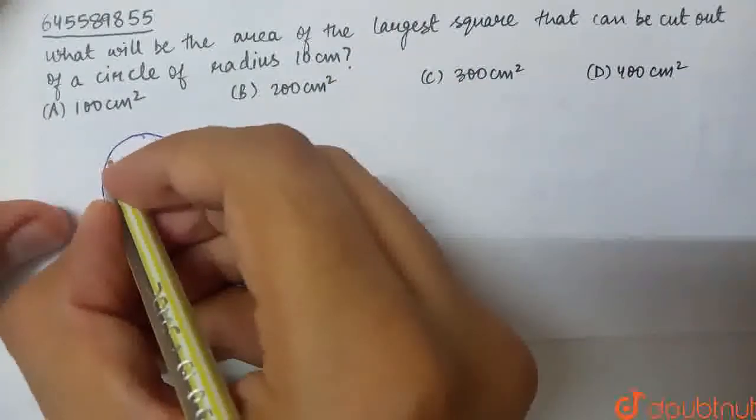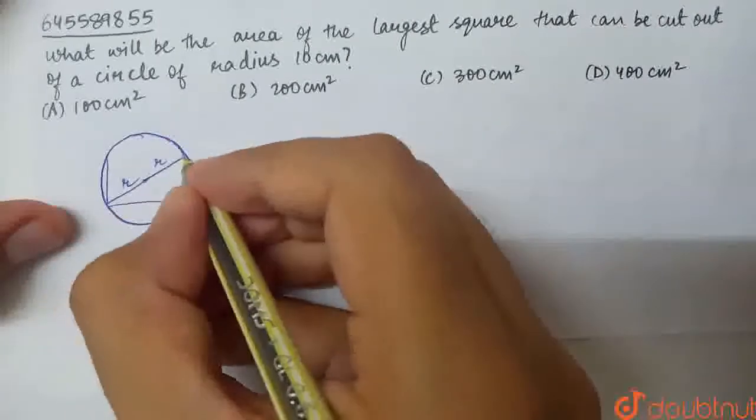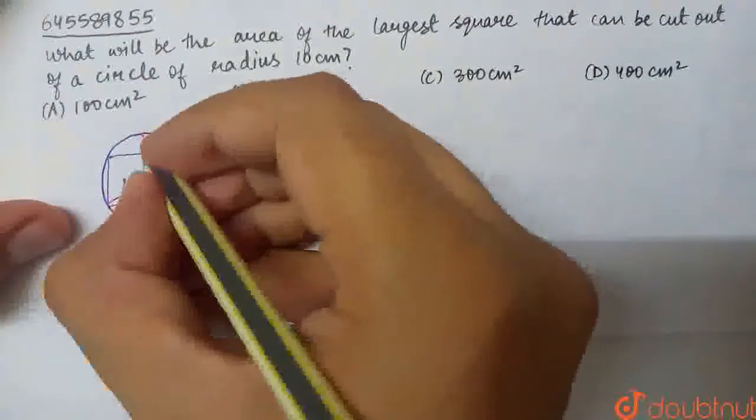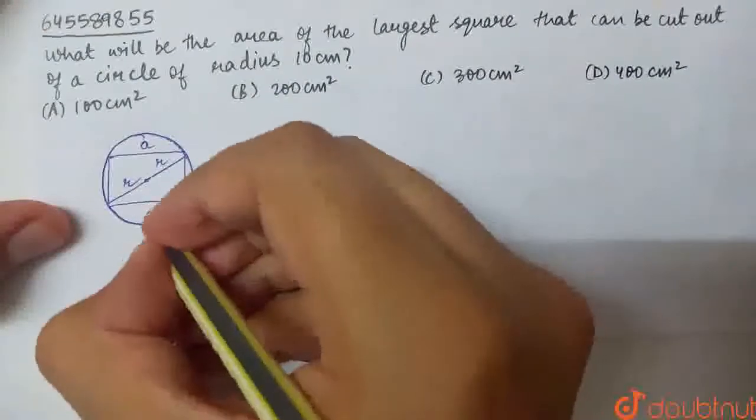If I make it here, the largest square will be like this. This is my side A, this is my side A, this is my side A, A and A.